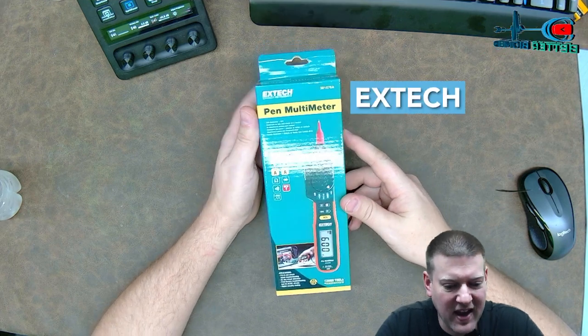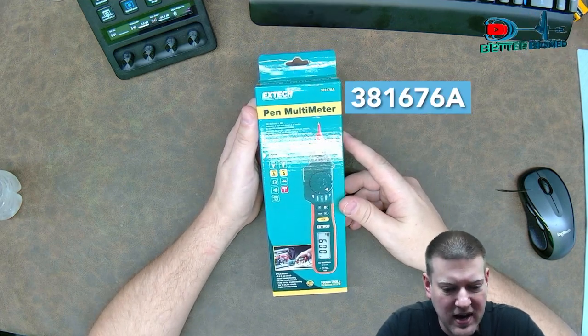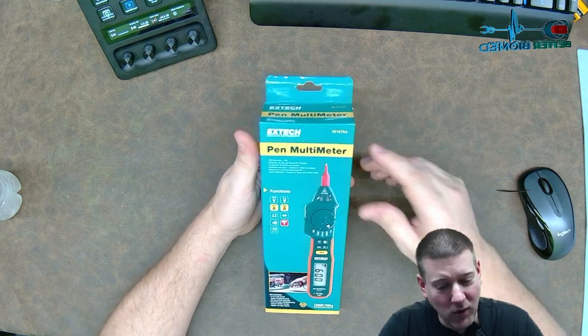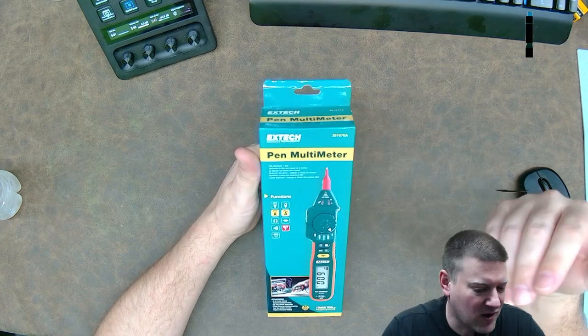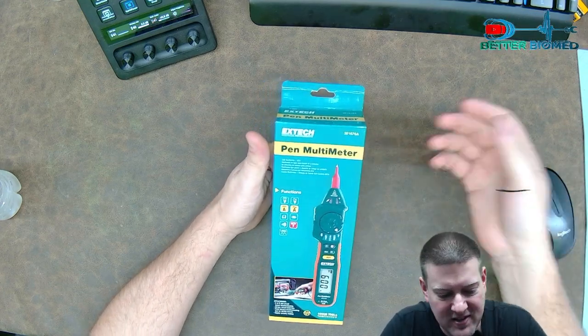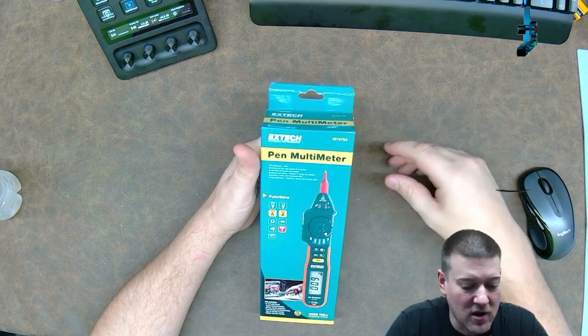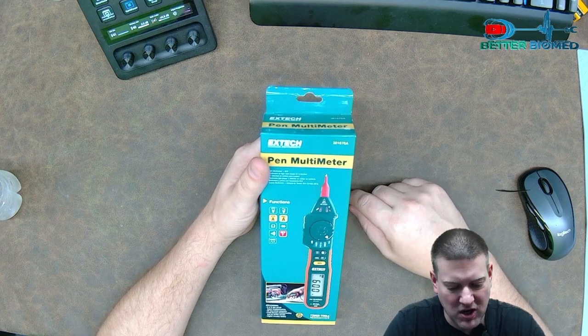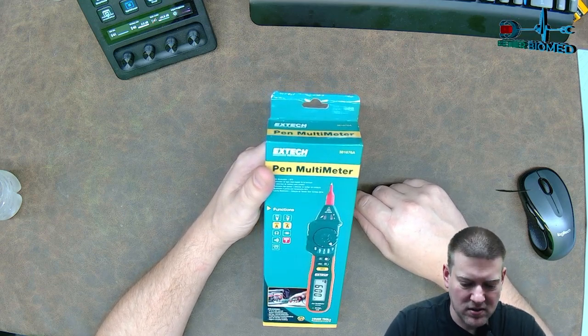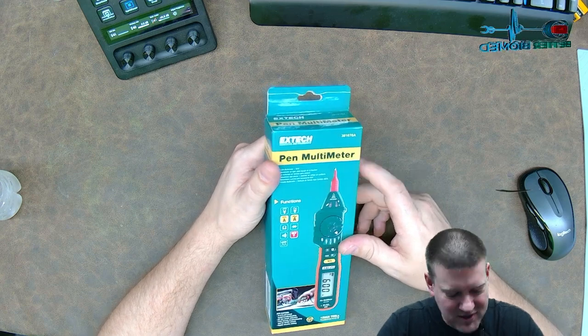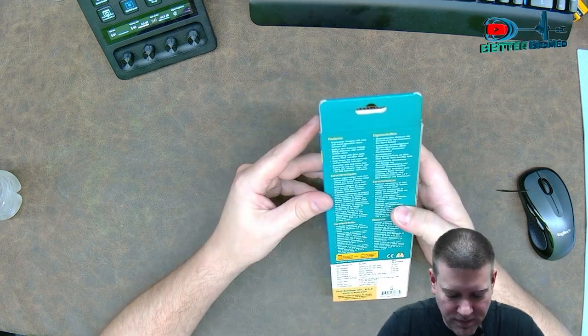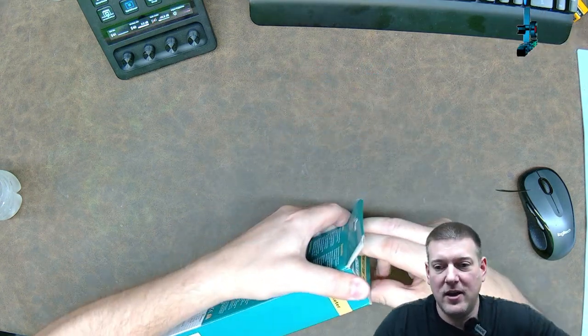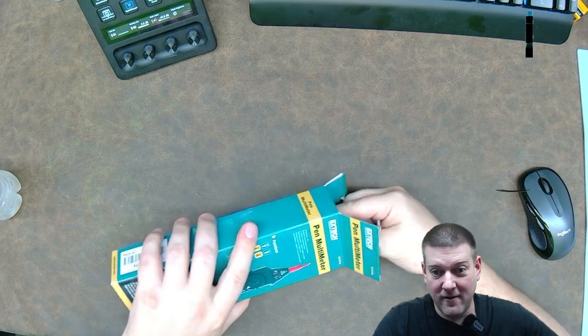All right guys, here we have the X-Tech. This is a 381-676-Alpha. That's what it says up here in the corner. It's the Pen Multimeter and according to all the things that I see, it's got voltage for AC and DC. It's got amps for AC and DC. It's got ohms, diode mode, continuity, non-contact voltage detection and it's got logic. I wonder what logic is. Who knows? Interesting. Looks like a cool little tool. It's got quite a bit of features and I don't think it's all that big given the size of the box.